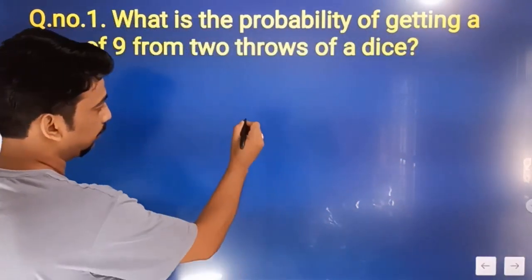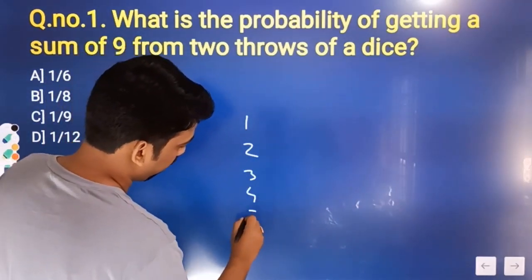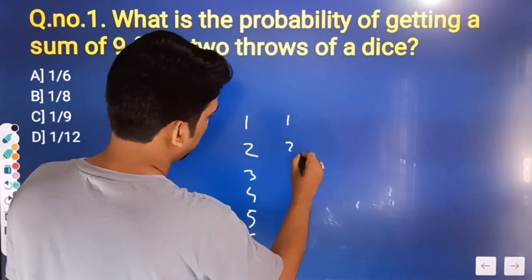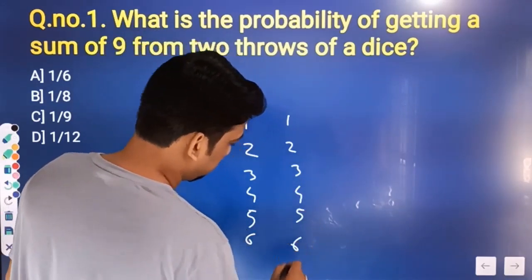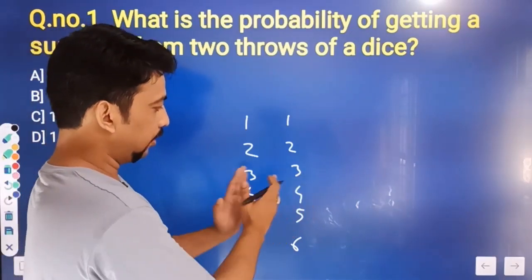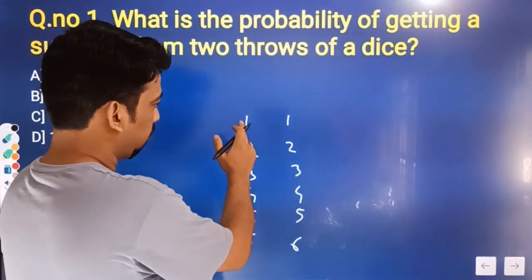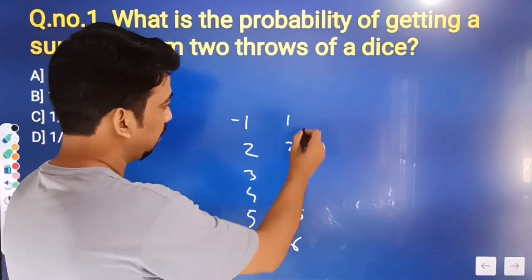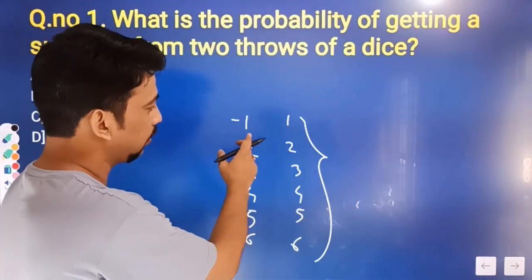The probability of getting a tail from one coin toss is 1, 2, 3, 4, 5, 6. So the probability outcomes are 1, 2, 3, 4, 5, 6.